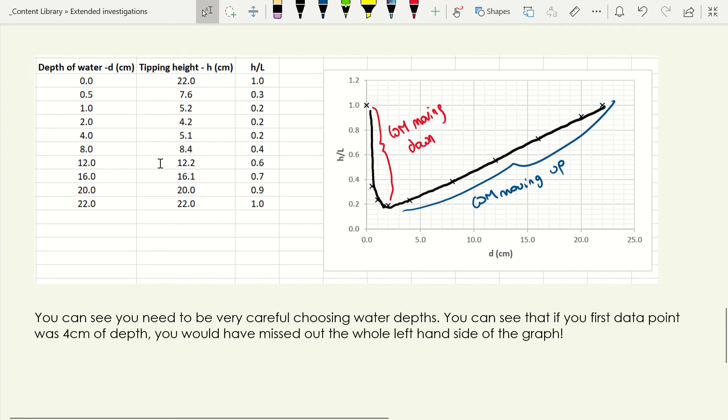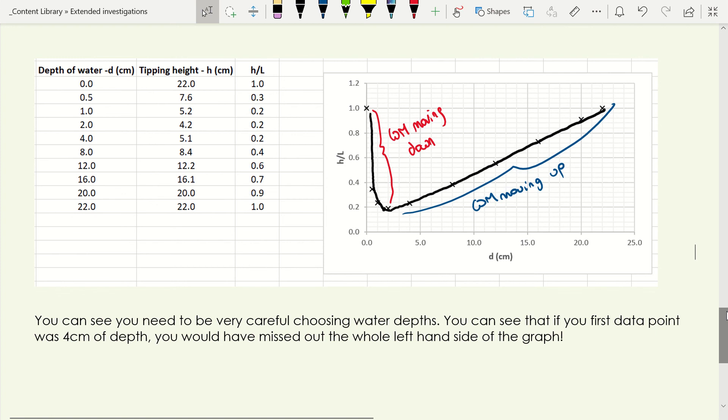When we're doing this experiment, we have to be really careful at choosing our depths of water. You can see that if your first data point was a four centimeter depth, you'd have missed this entire section over here on the left-hand side. If you only had small values of d, you'd have only got this section on the left-hand side. But if you have a good range of d's, you can see the whole relationship going on here. This experiment is a really nice illustration about choosing very carefully your values of d and coming back later on to explore what's going on.